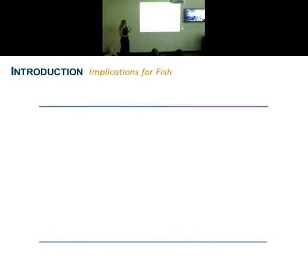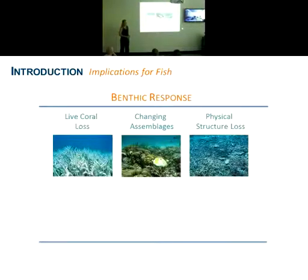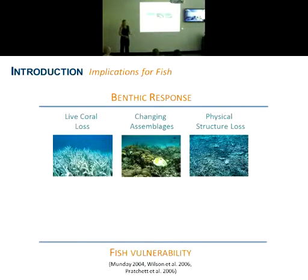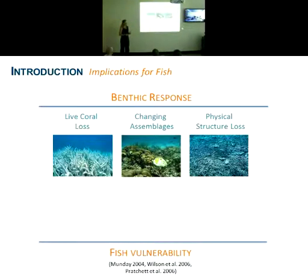In thinking about what's going to happen to fish due to habitat degradation, the next step is to consider what the fish response is likely to be. This is reliant to a large extent on the vulnerability of certain groups within the fish community, which is likely to be dictated by things like the specific life history strategy of different species.